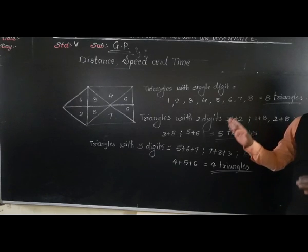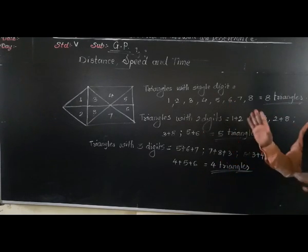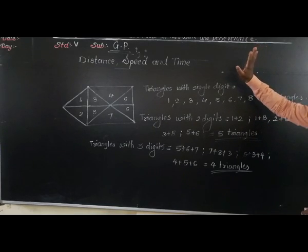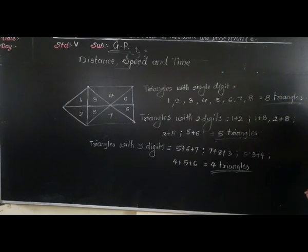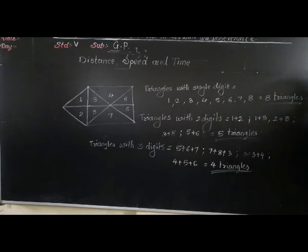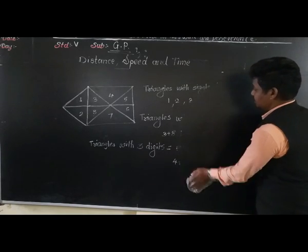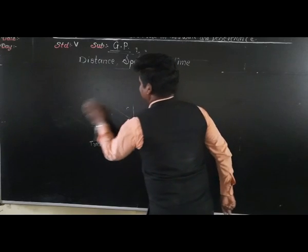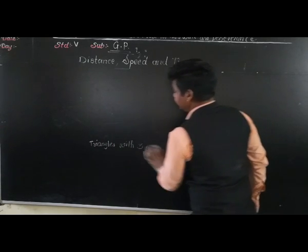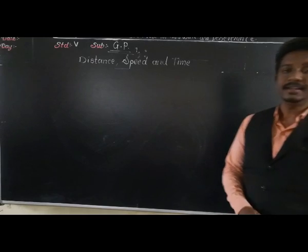So in this way we count triangles when the figure is irregular. When the figure is regular, I have already told you how to count. Now let's move towards our new lesson — the new chapter: Distance, Speed and Time.